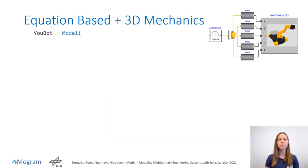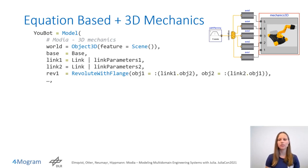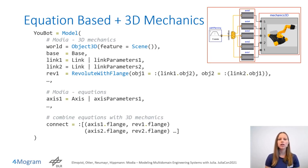Let's build up a U-Bot model. It consists of the 3D mechanics, where we introduce two links. And those are connected via revolute joints. Each motor is driven by an axis, and the equations are connected with the 3D mechanics via its flanges.